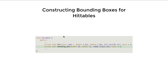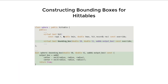For every object we need to construct the bounding boxes. For the sphere it's pretty trivial: we get the center point, and center minus a vector where all three dimensions are the radius of the sphere - that gives the minimum point of the bounding box. Similarly, center plus that vector gives the maximum point of the bounding box.